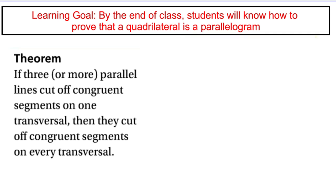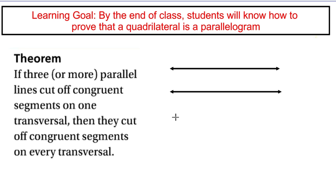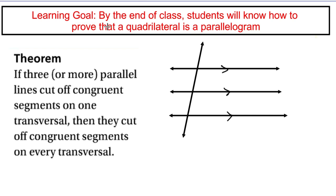The theorem states that if you draw several parallel lines and cut them by a transversal — so if three parallel lines are cut by a transversal — we mark these as parallel using arrows: one, two, three. These are parallel lines, and if I cut them with a transversal, I can cut it wherever I want.